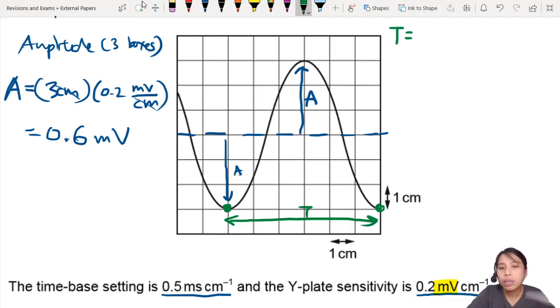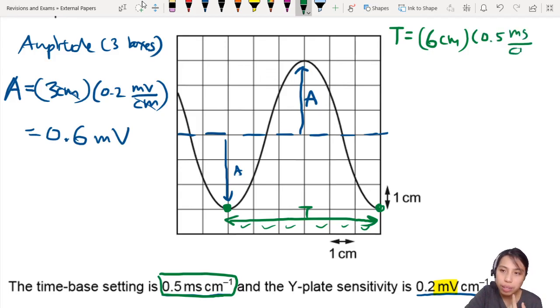So period in terms of the screen is 1, 2, 3, 4, 5, 6 boxes. So that is 6 cm. But 6 cm needs to be converted into time, into seconds. So I'm going to use my time-based setting here and say, oh, each cm is 0.5 milliseconds. So 0.5 milliseconds per cm. The cm's nicely cancelled out.